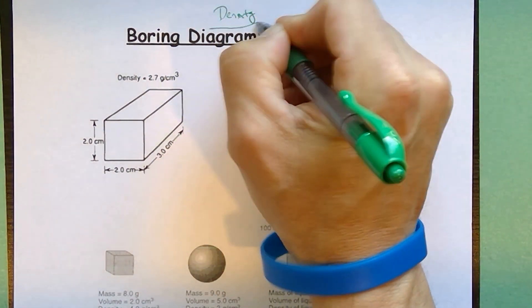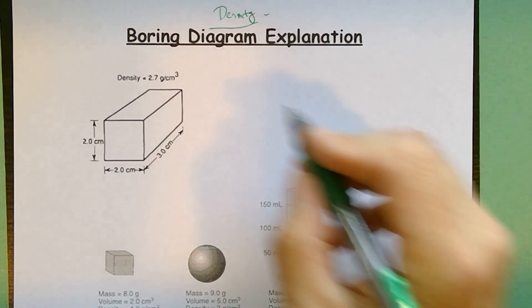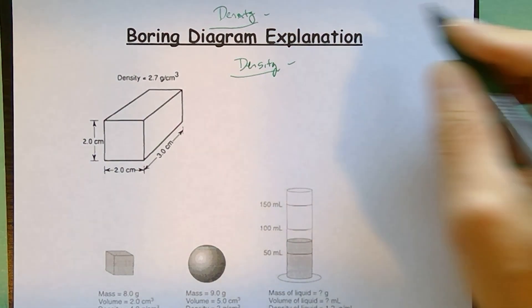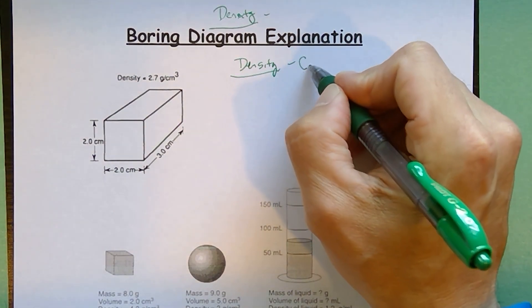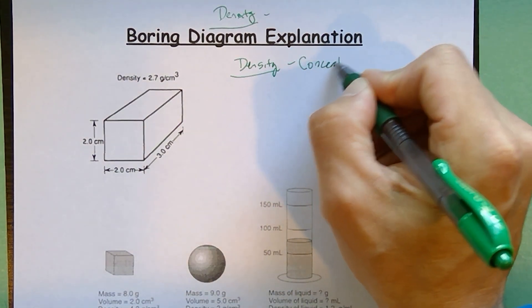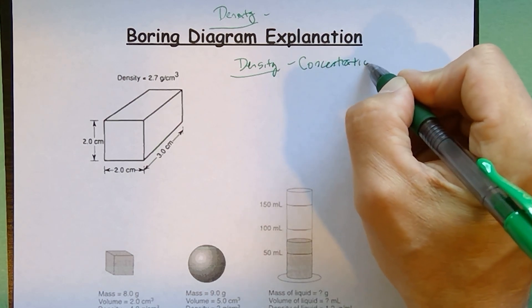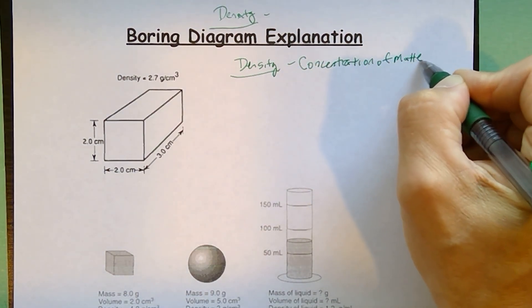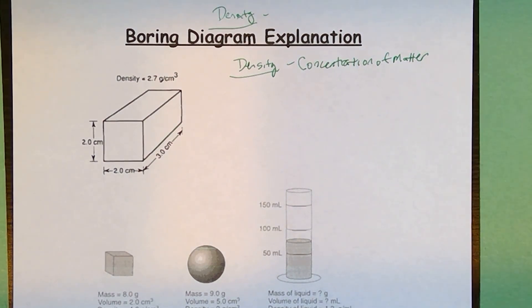First thing that we should go over is the definition for density. So if you wanted to define density in words, what density really describes is the concentration of matter. It's telling you how much stuff you have packed into what amount of space.